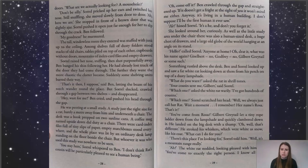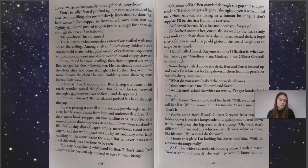'What do you want?' asked the rat in shrill tones. 'Your cousin sent me. Gilbert,' said Sorrel. 'Which one?' said the rat warily. 'I've got hundreds of cousins.' Sorrel scratched her head. 'Well, we always just call her Rat. Wait a moment — I remember. Her name's Rosa. That's it.' 'You've come from Rosa?' Gilbert Greytale let a tiny rope ladder down from the lampshade and quickly clambered down it. He landed on the big desk with a thump. 'Well, that's different.' He stroked his whiskers, which were white as snow, like his coat. 'What can I do for you?' 'There's this place I'm looking for,' Sorrel said, and told him. 'Well, it's a mountain range really.' The white rat nodded, looking rather pleased with himself. 'You've come to exactly the right person. Let's go.'